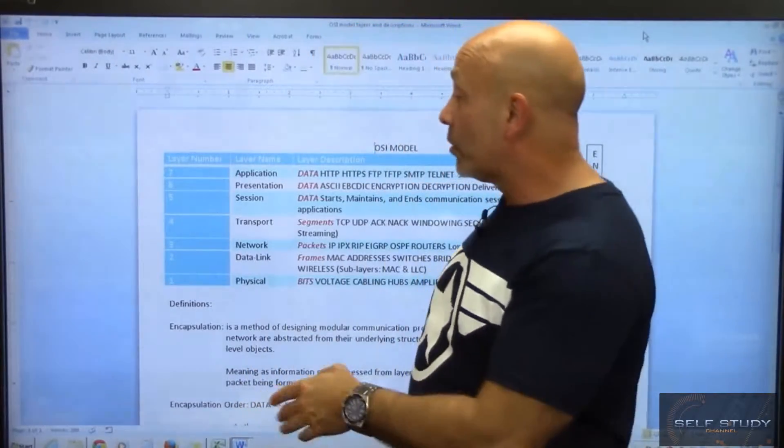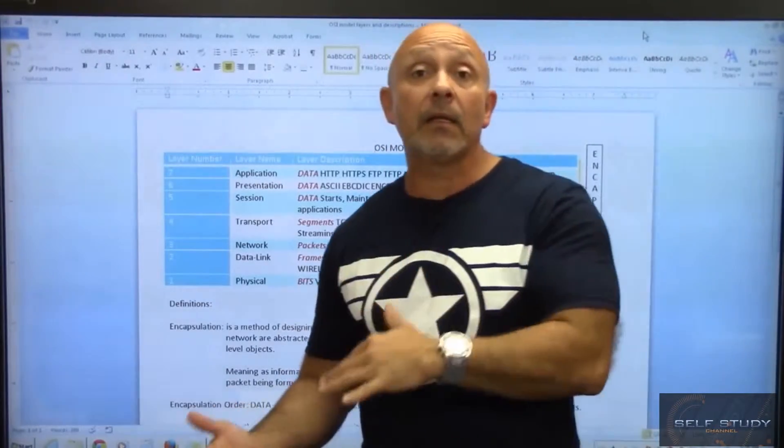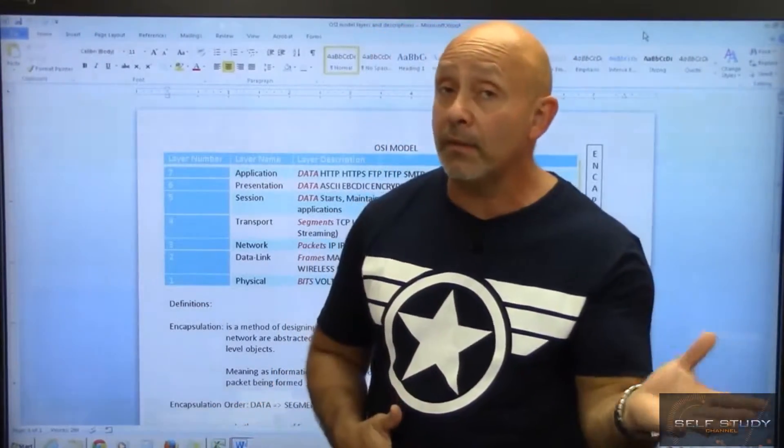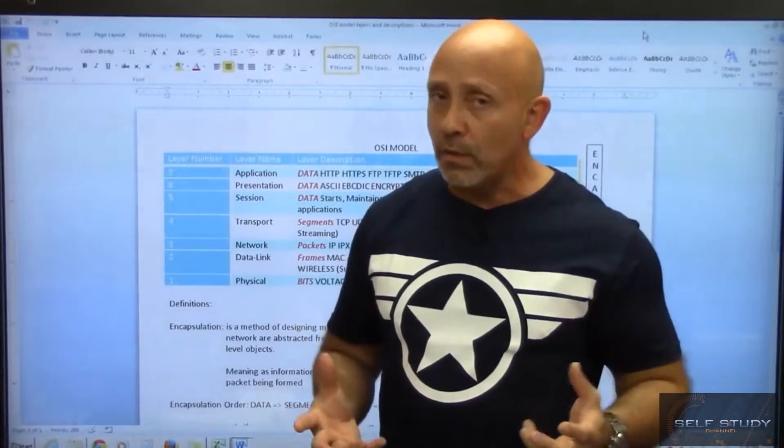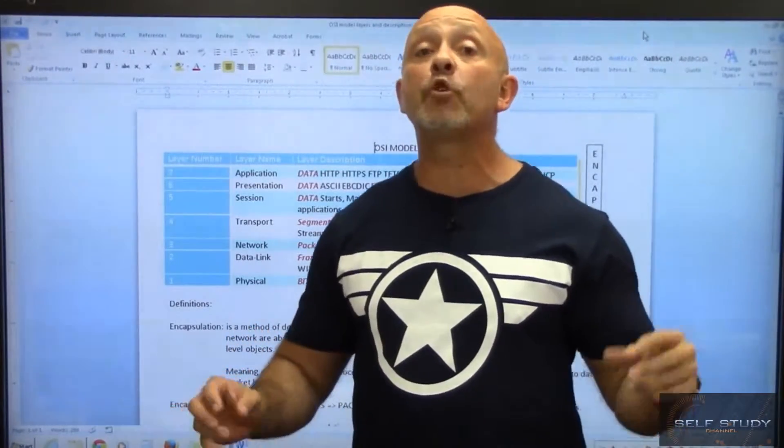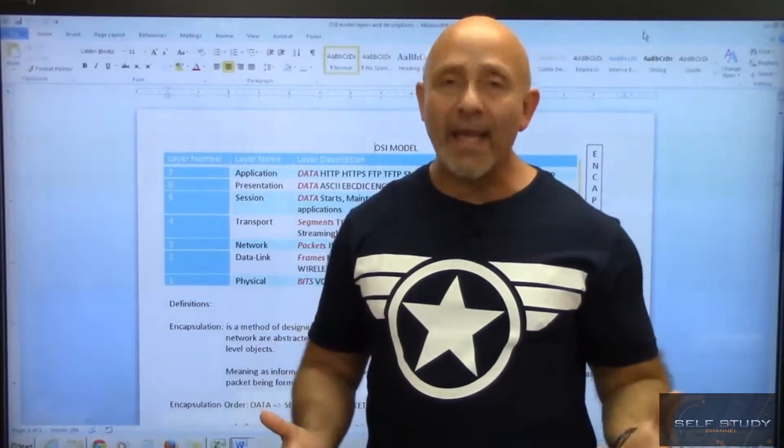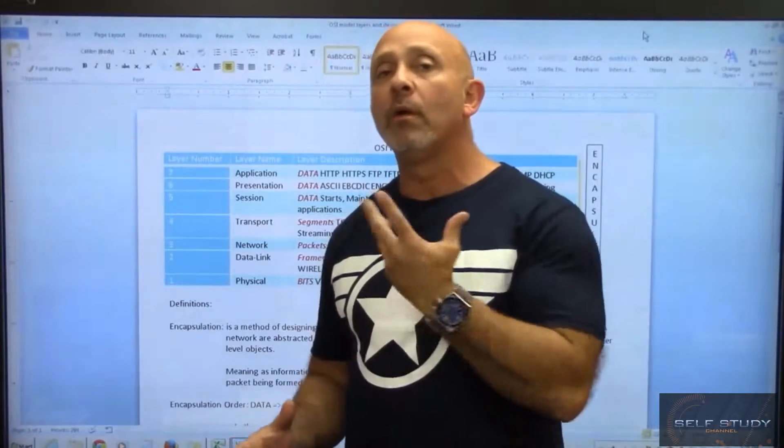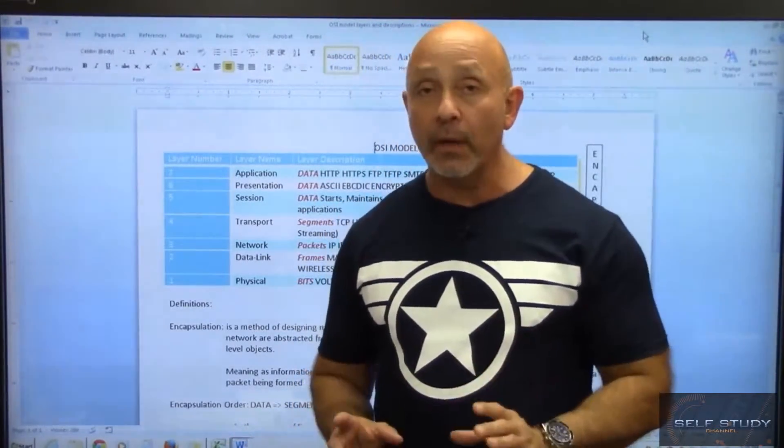You need to make sure that, hey, layer two is the data link layer. Hey, the data link layer has two sublayers, the LLC and the MAC. Things like that. That's the kind of things you need to be aware of. That it's just a logical understanding. As the verbiage in your book, the conceptual blueprint. For us to understand the flow of information and what happens at each layer up to a certain point.